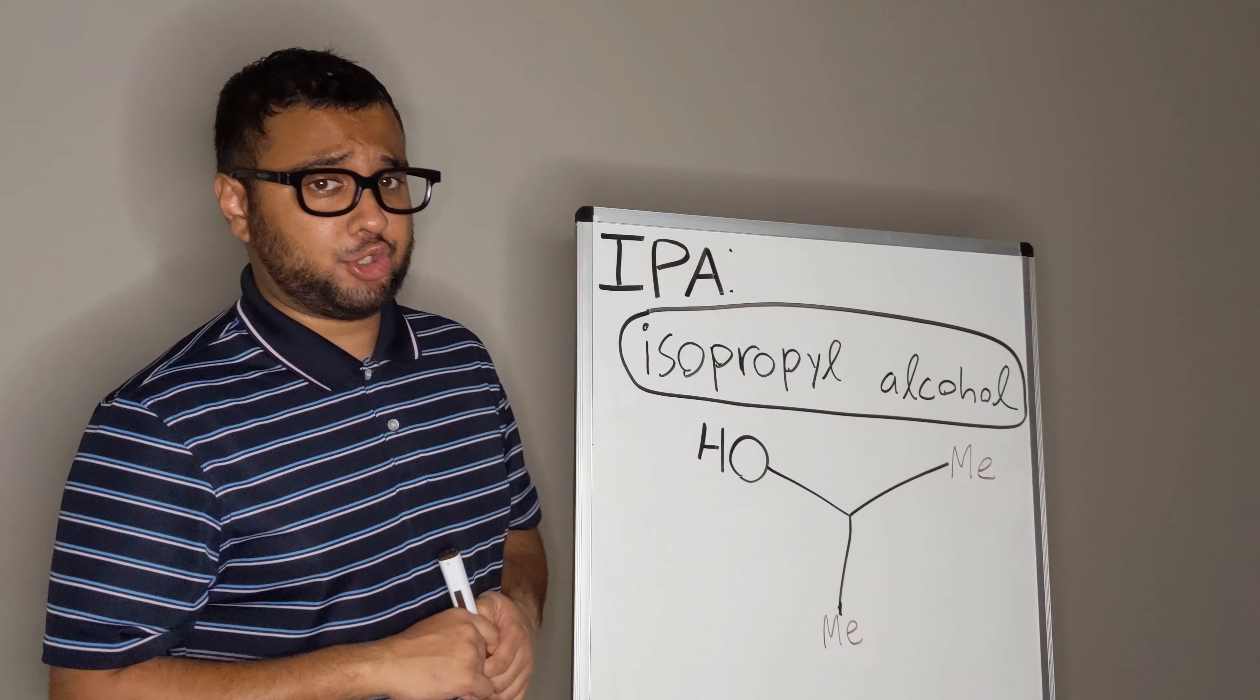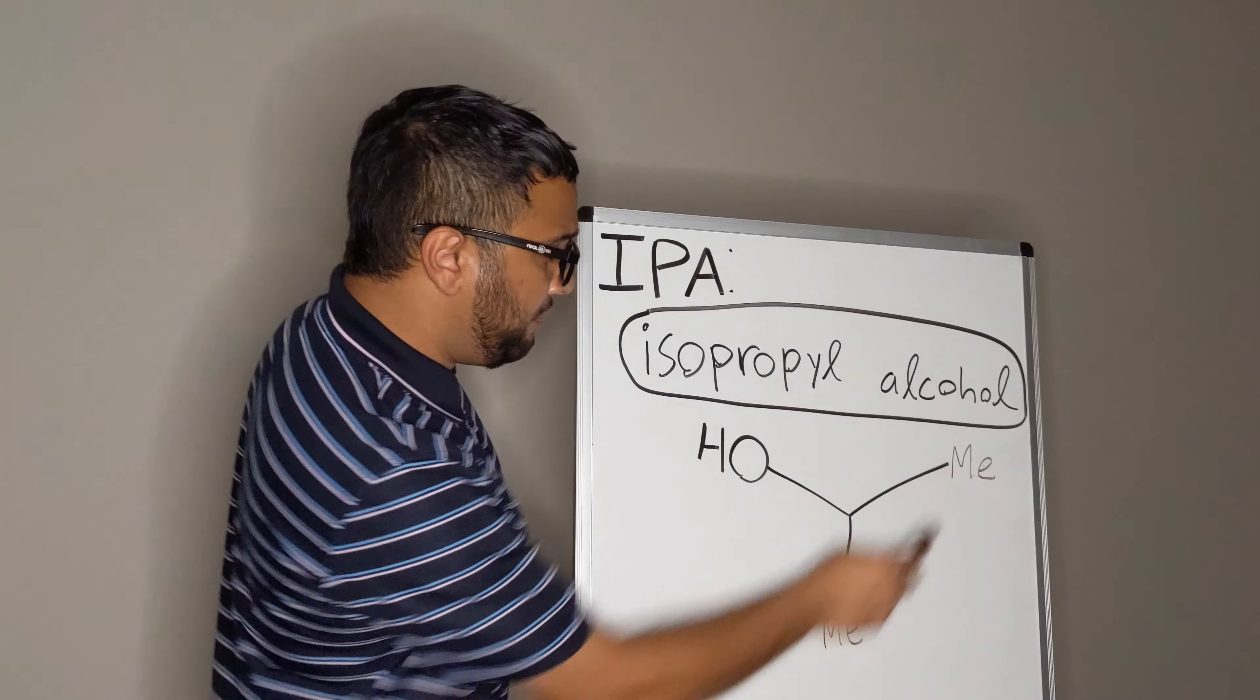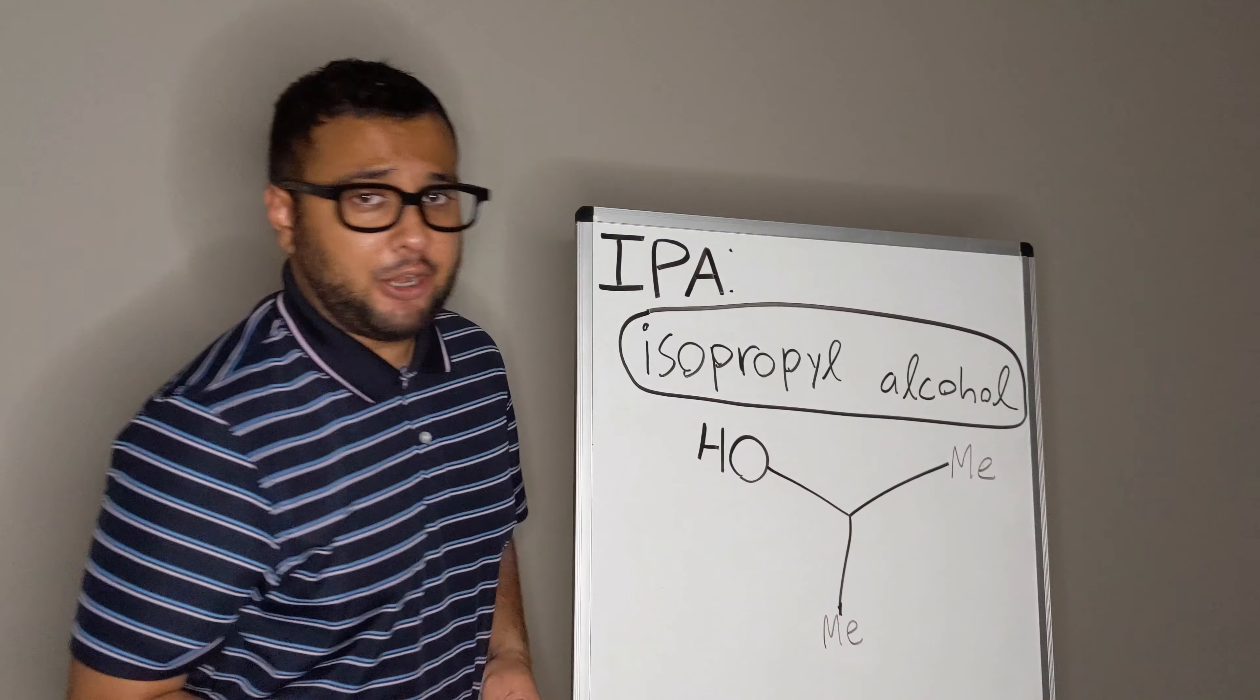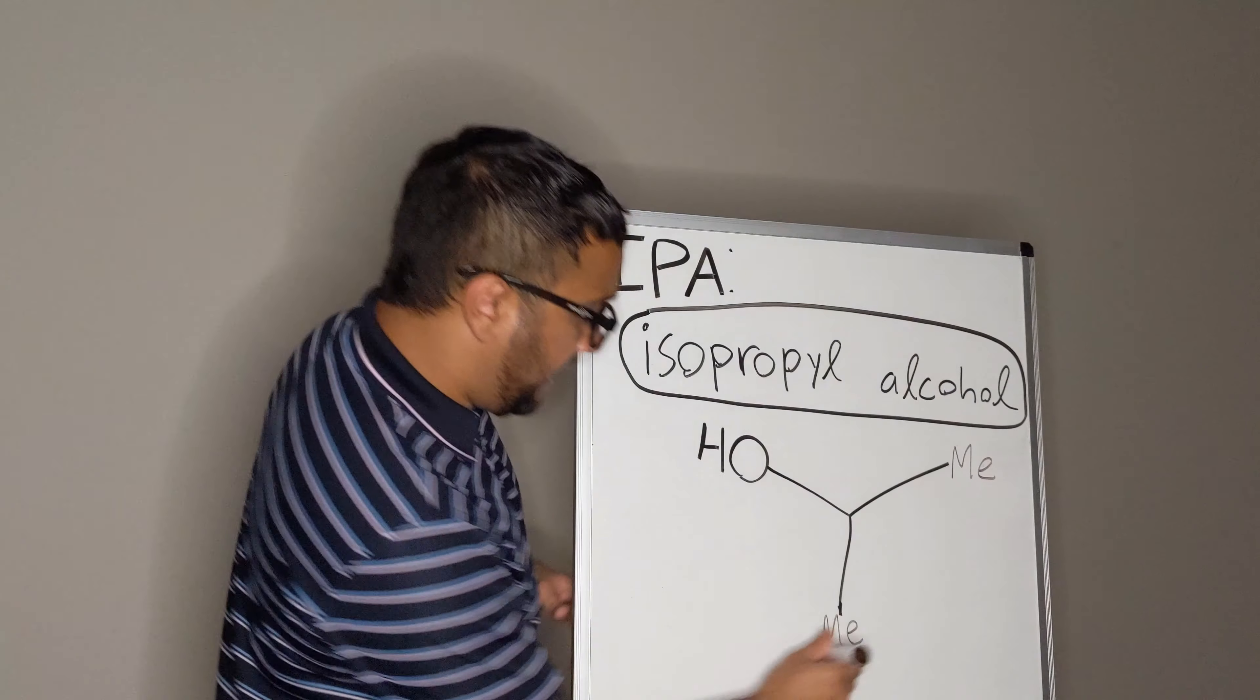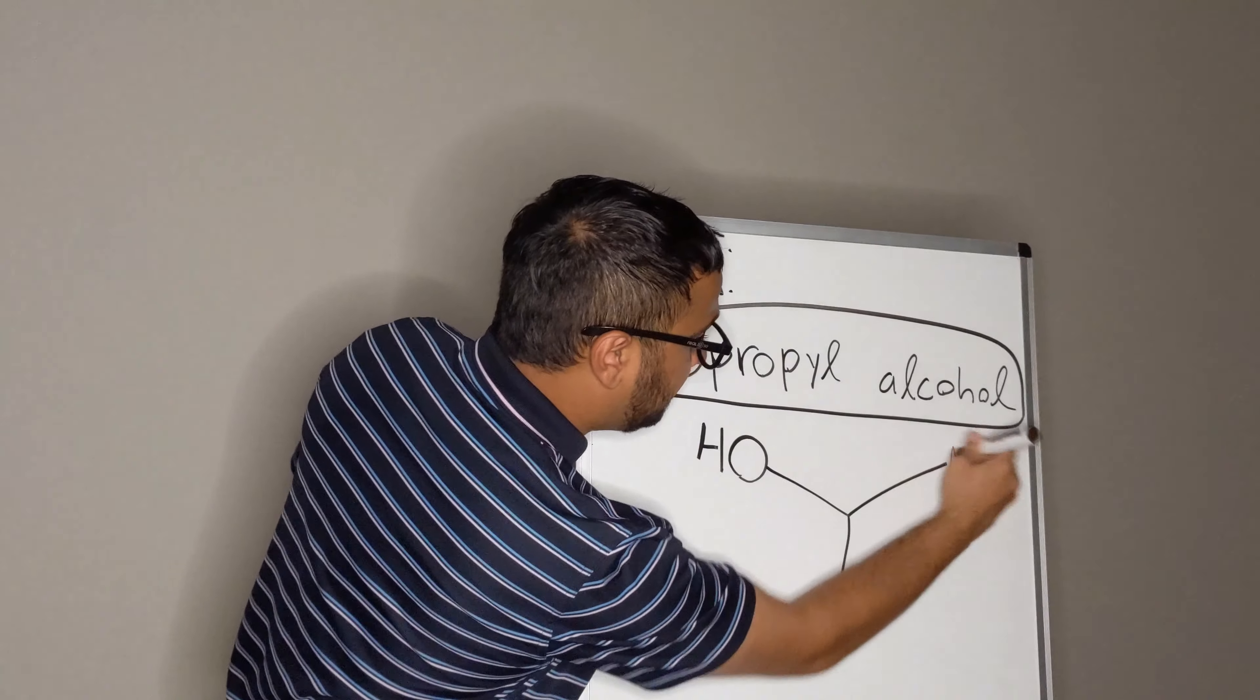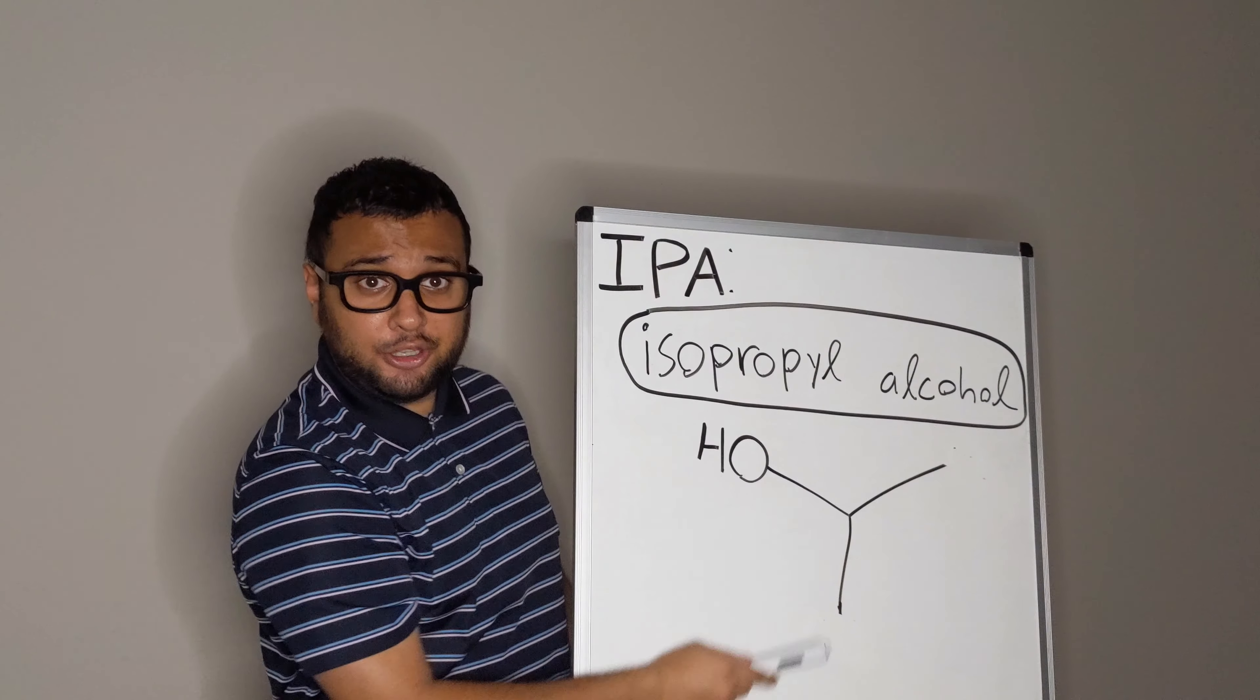You might be wondering, what is the chemical structure of isopropyl alcohol? So it's got two methyl groups. And we know what methyl groups are. They're all about me. And the funny thing is, even when I'm out of the picture, these are still two methyl groups.